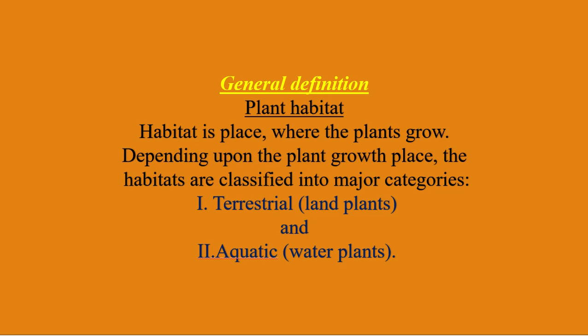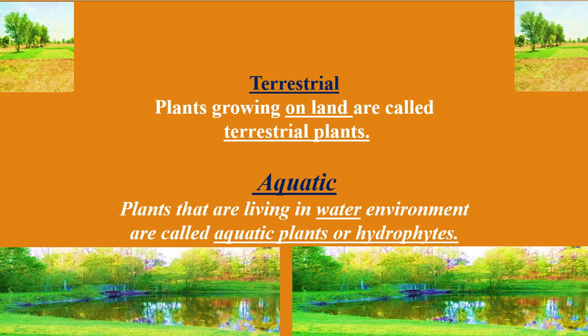They are the terrestrial habitat and aquatic habitat. In terrestrial habitat, plants grow on the land surface, and those plants are represented as terrestrial plants. In aquatic habitat, plants prefer to live in the water environment or water bodies, and those plants are called aquatic plants or hydrophytes.